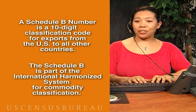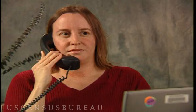I'm shipping a laptop and software to England. What's a Schedule B number? It's a 10-digit classification code for exports from the U.S. to all other countries. The Schedule B is part of the International Harmonized System for Commodity Classification.